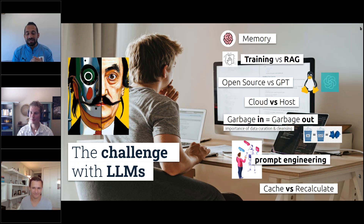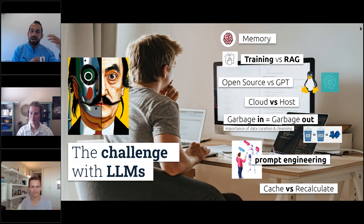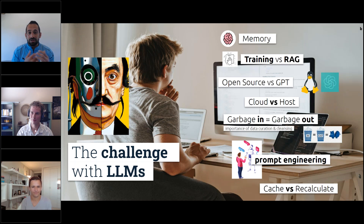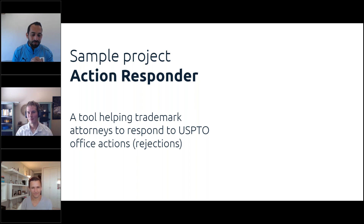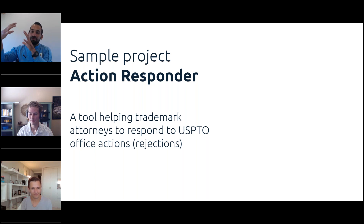To build context, I'll talk about a project we did together. Our client was Action Responder — a legal startup that helps trademark attorneys file trademark applications. When you file, the USPTO examining officer gives you rejection reasons: the trademark is too similar to another, creating confusion, or not descriptive enough. The filing attorney then has to refute those reasons, cite similar approved cases, and that process takes a lot of time. We wanted to automate it — not fully, but to create a template of responses, maybe 80–90% there, that the filing attorney can use.